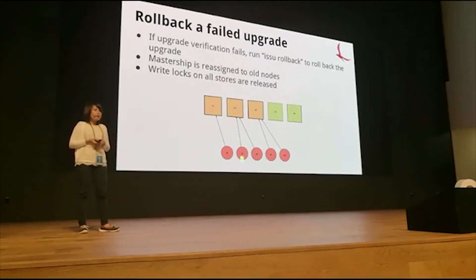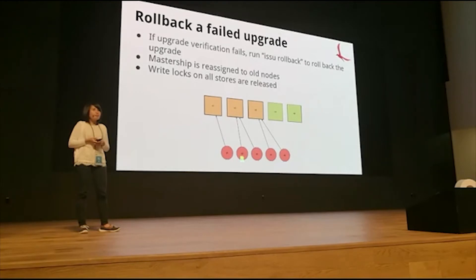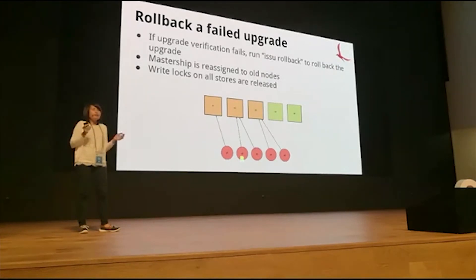For rolling back a failed upgrade: if your verification fails, you issue an ISSU rollback command. This command changes mastership back to the old nodes, so your devices end up with the old state. The locks on the devices are removed, and it goes back to the old state where it can participate in changes and events in the network and continue to function as previously.